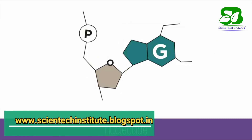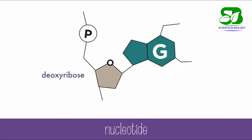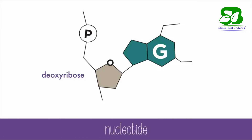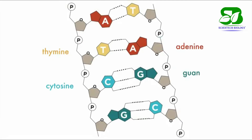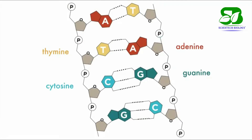In DNA, the sugar is deoxyribose and there are four nitrogen bases. The bases are thymine, adenine, cytosine, and guanine.